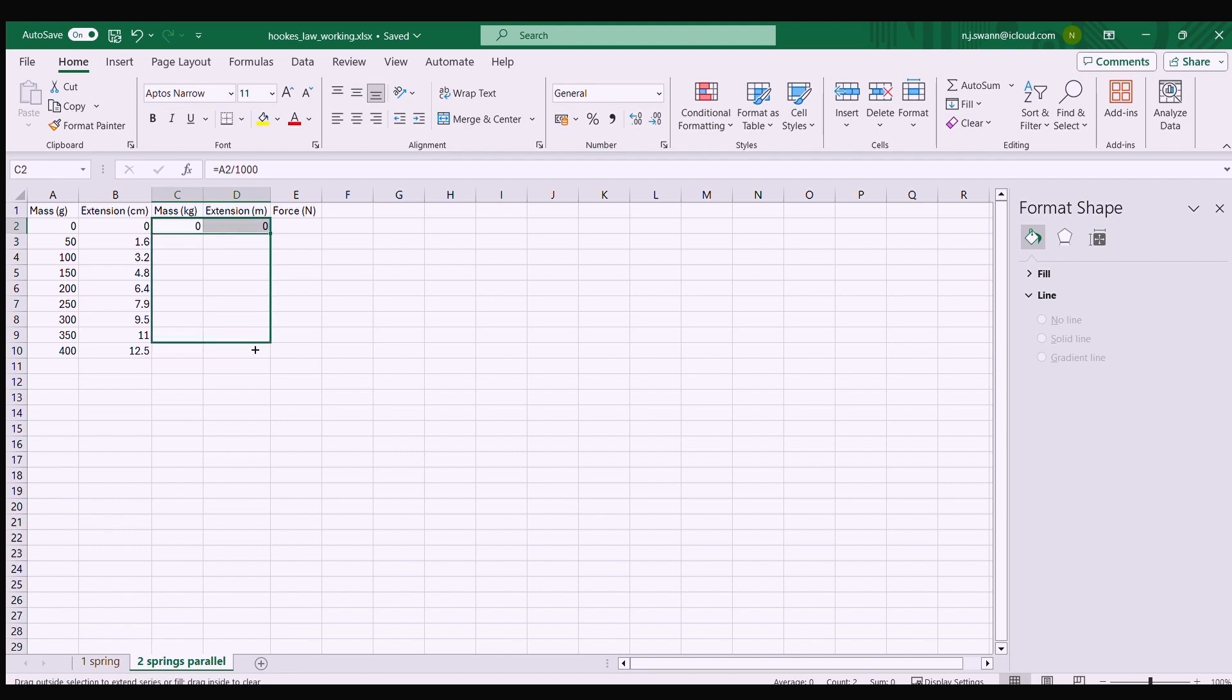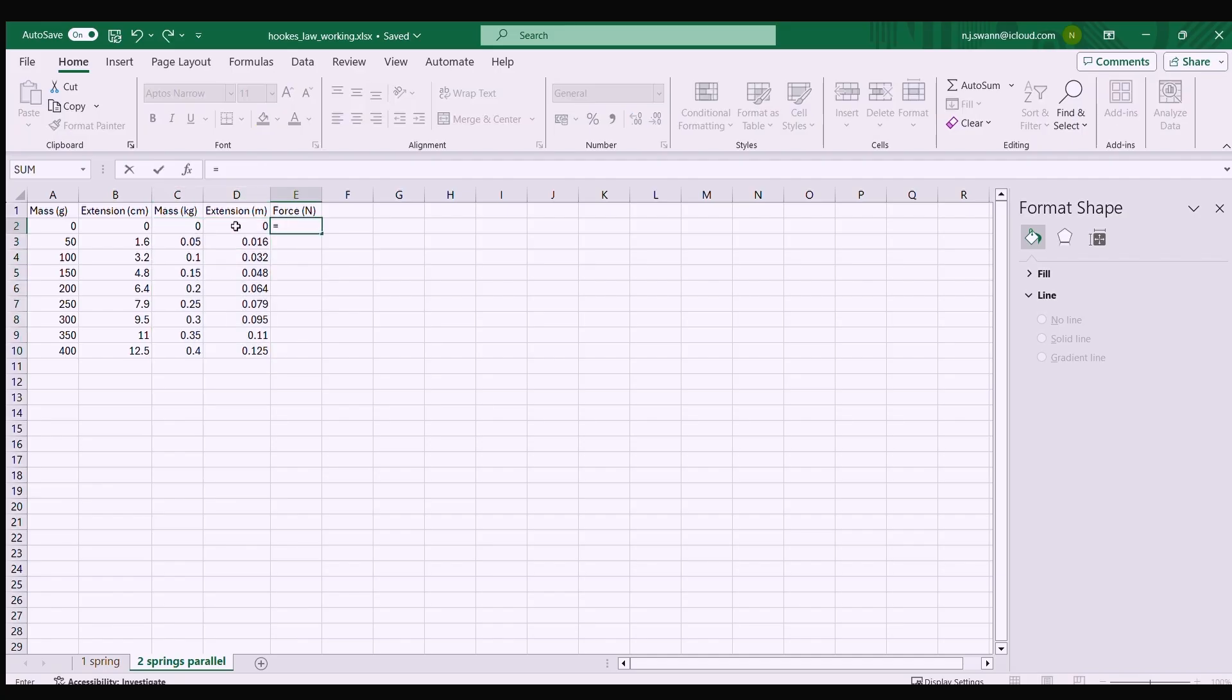Then for my graph I need to be plotting force instead of mass so the equation is F equals mg so I'm going to need my mass in kilos times by g which is 9.81 and then I can drag that down.